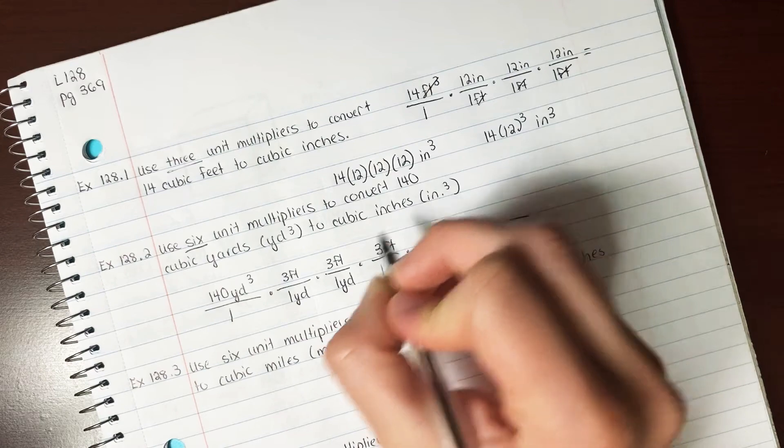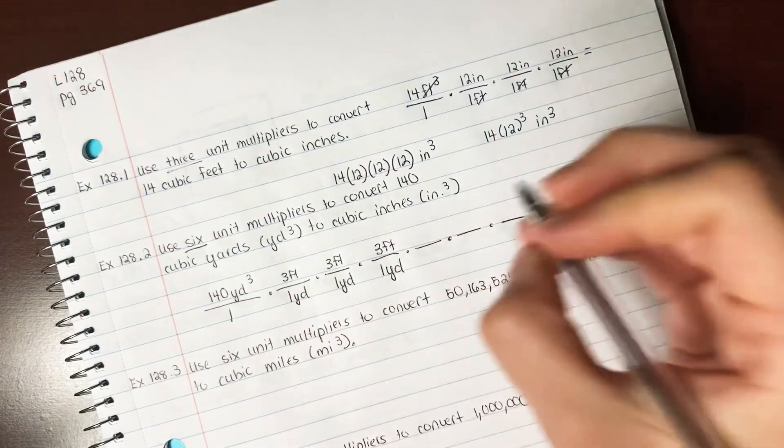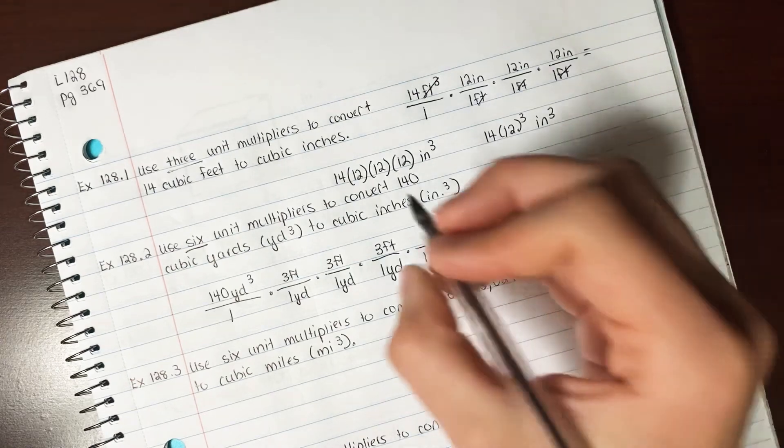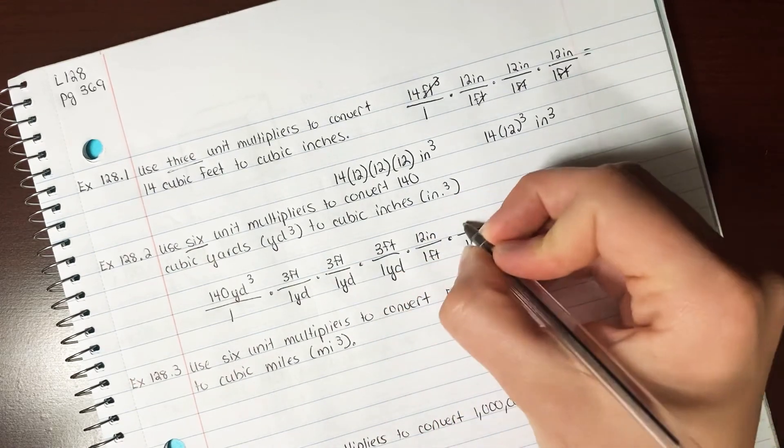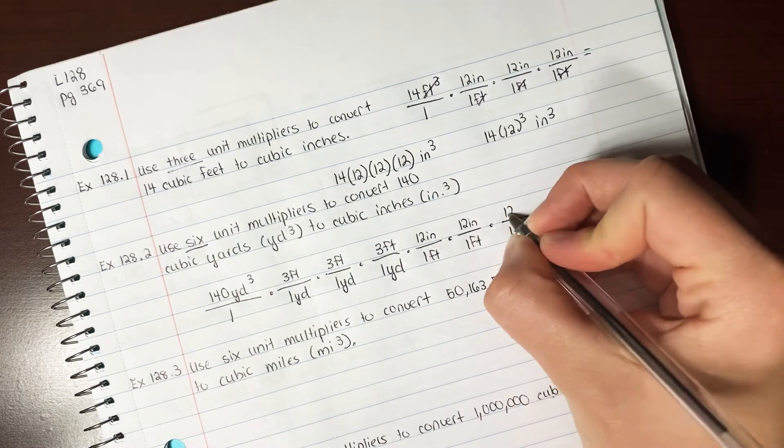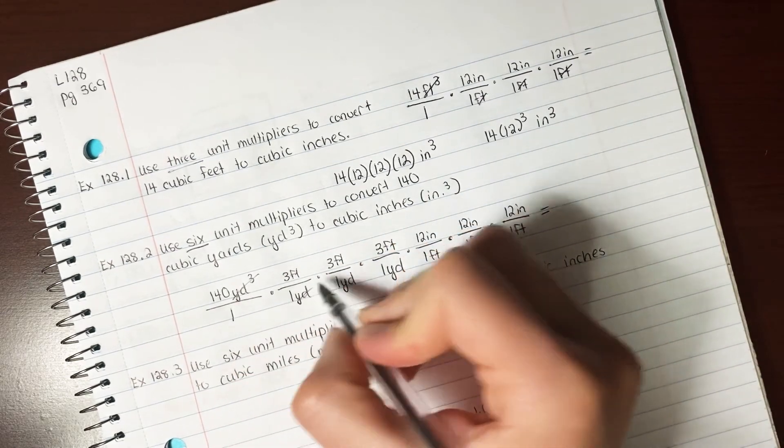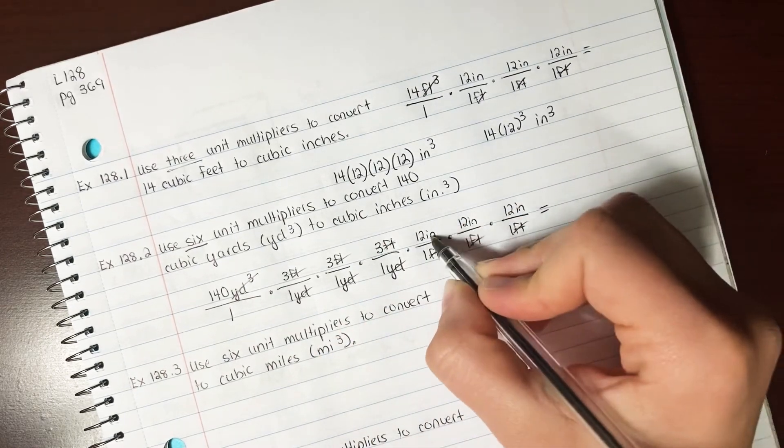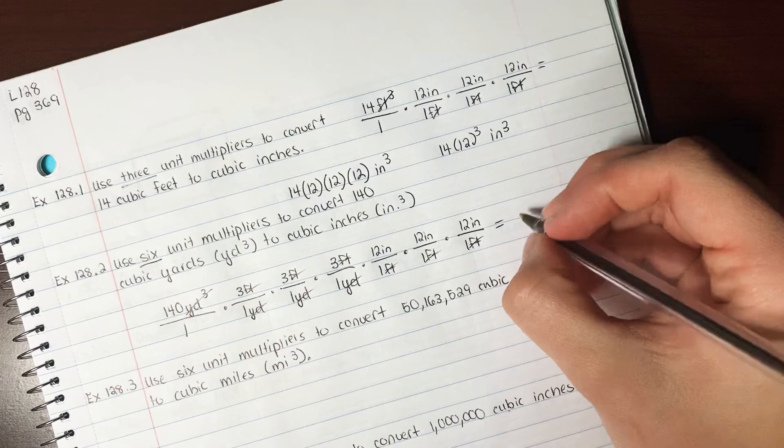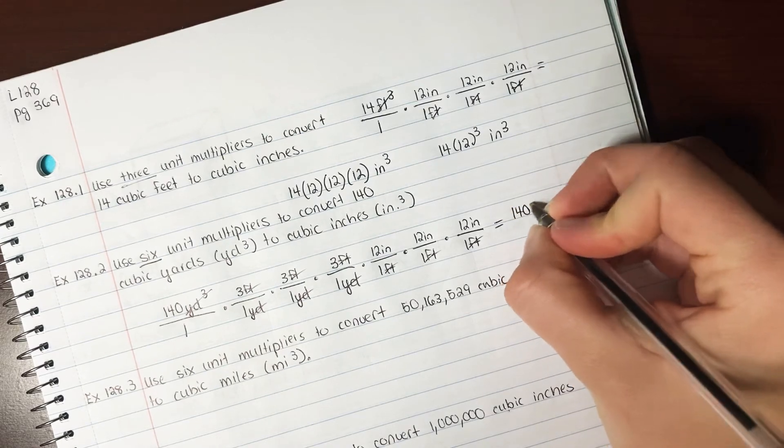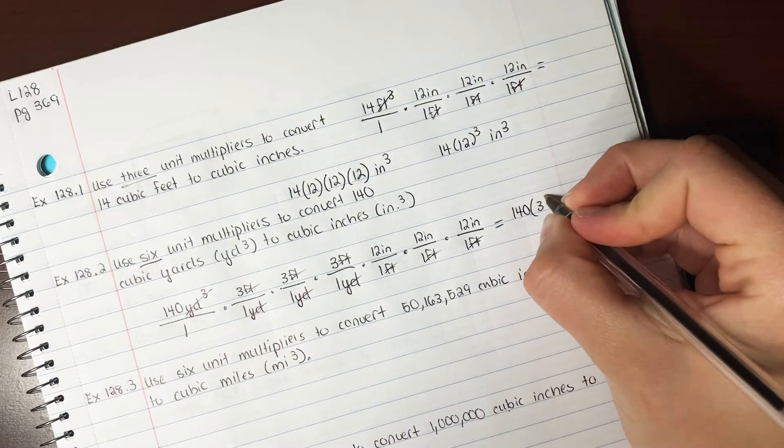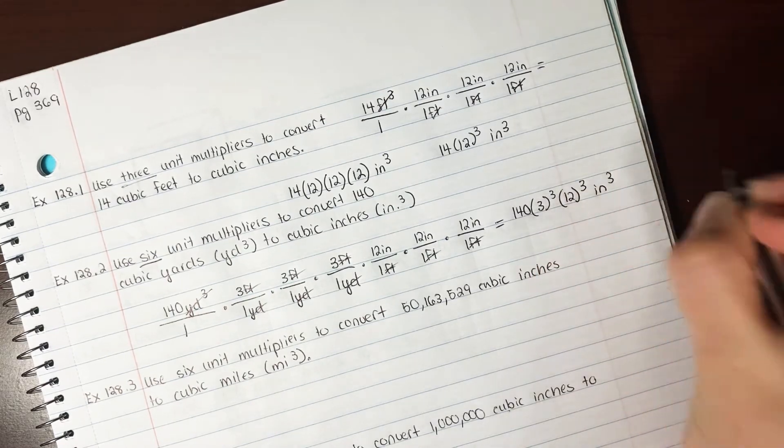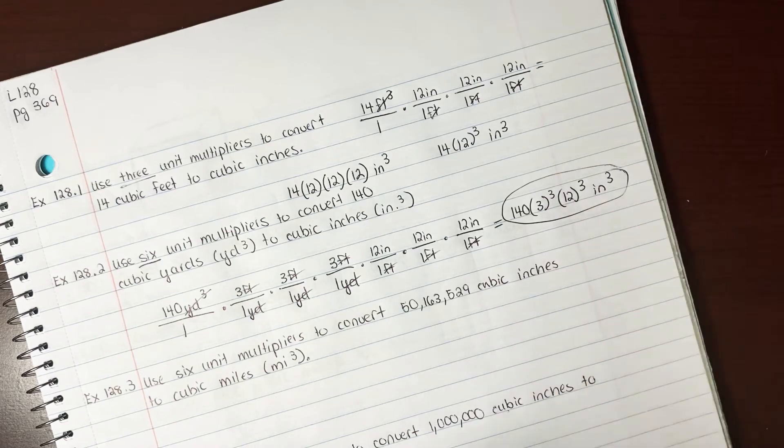Now we need to end up with inches, so we're also going to need to cancel these feet out. So we're going to need three on the bottom. How many inches are in a foot? Twelve. Hopefully you remember that. So then cancel out your units. We're left with inches cubed, which is what we want. So we can write our answer 140 times 3 cubed times 12 cubed inches cubed. And that would be your answer.